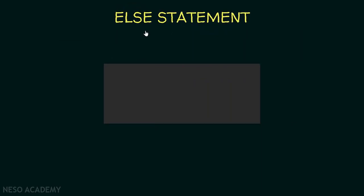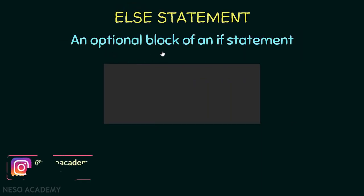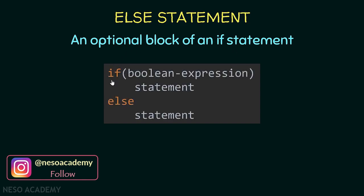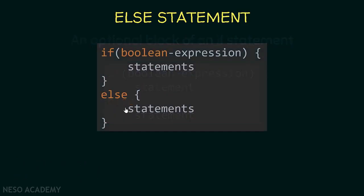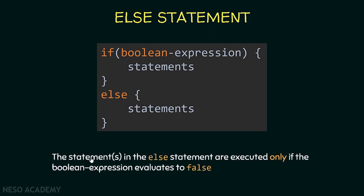So let's get started. What is the else statement? It is an optional block of an if statement. Looking at this code, I'm using the if statement with one statement inside it. We can optionally use the else statement, and we can have one or multiple statements inside the else block — using braces — which don't have a relation with the braces of the if statement.